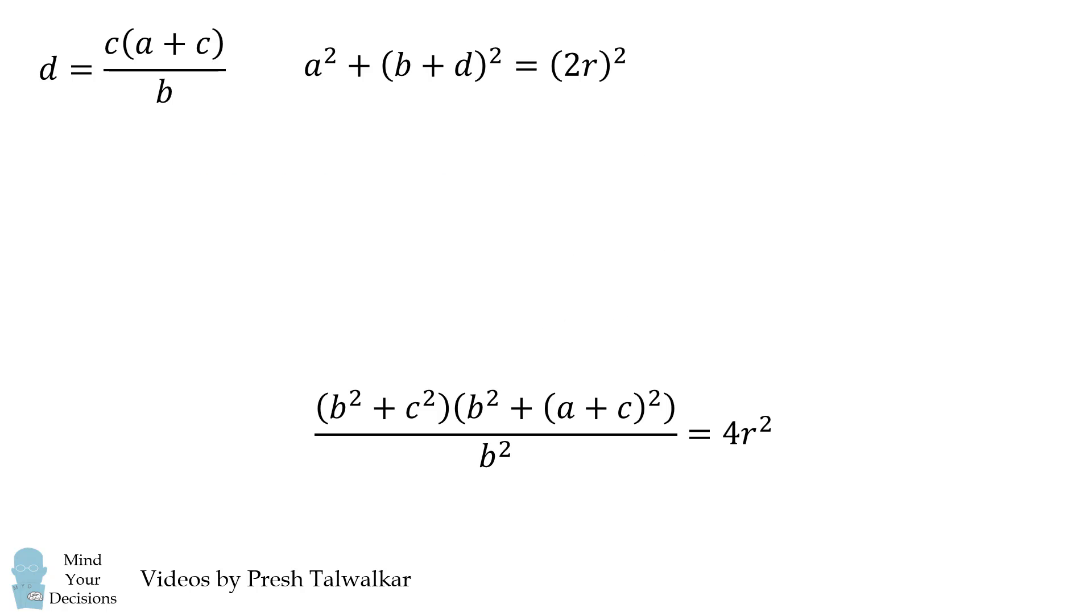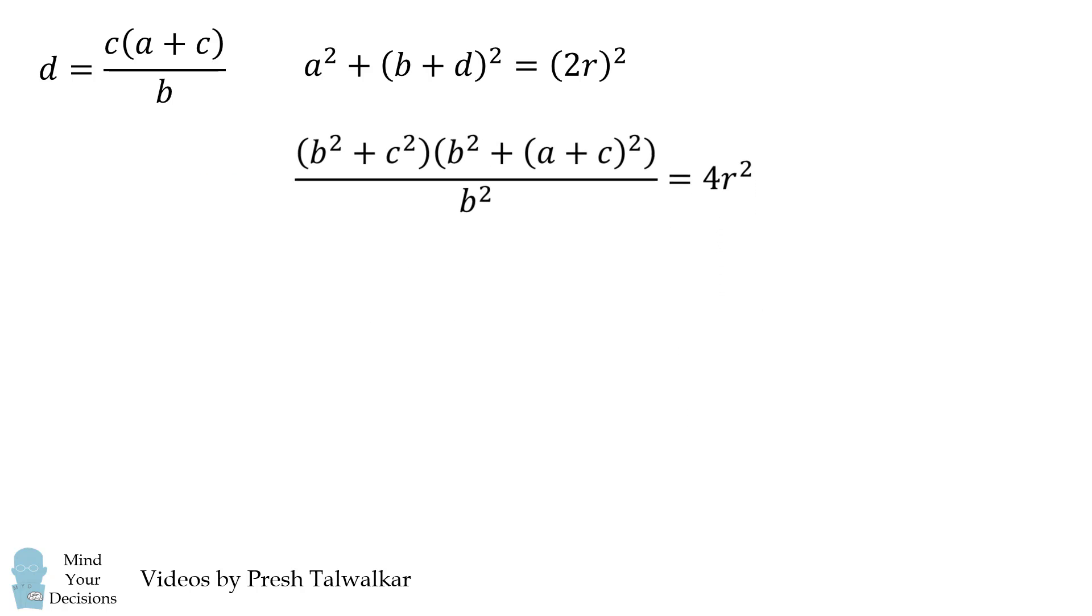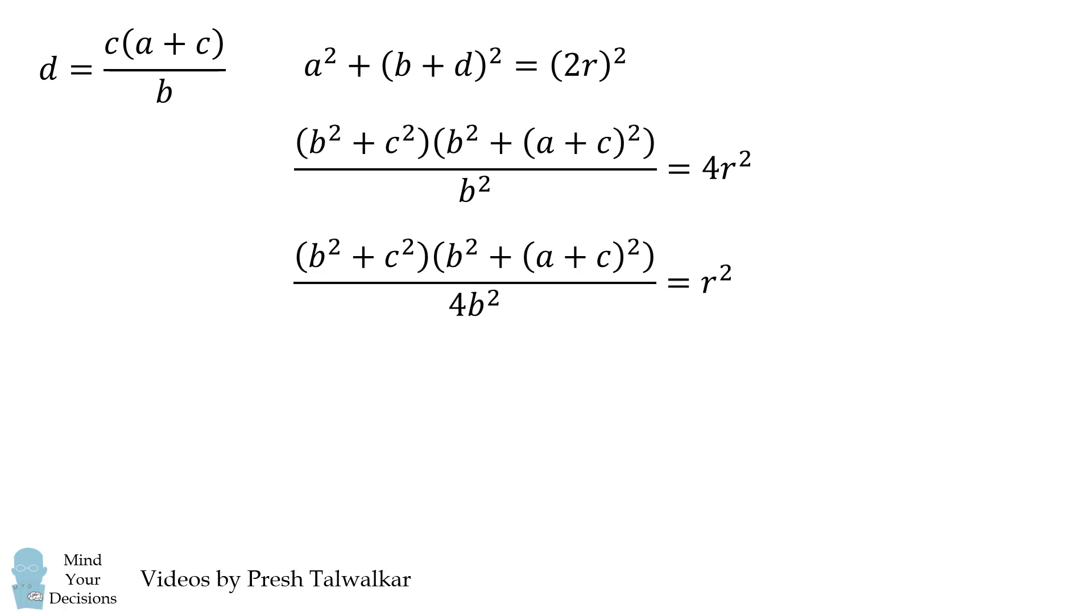So now we're ready to solve for R. We can divide both sides by 4 and then we can take the square root. Now, since R is positive, we only need to consider the positive square root.